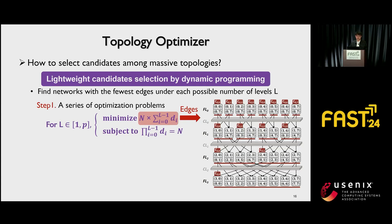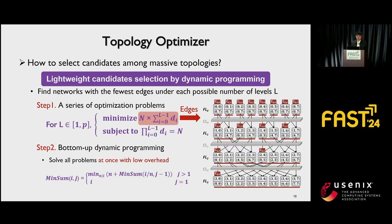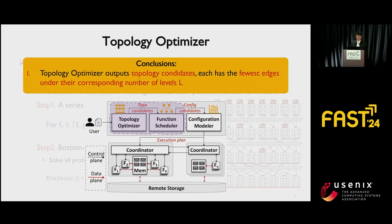Generating execution plans for all topologies incurs non-negligible overhead. So the second challenge is how to select candidates among massive topologies. We propose lightweight candidate selection by dynamic programming. Instead of considering all topologies, we find networks with the fewest edges for each possible number of levels. Our multi-level network satisfies that the number of network edges equals N times the sum of DI, and the product of DI equals N. We mathematically model this as a series of optimization problems — minimizing the number of edges for each possible number of levels — and propose a bottom-up dynamic programming algorithm to solve all problems at once with low overhead. The topology optimizer outputs topology candidates each with the fewest edges.